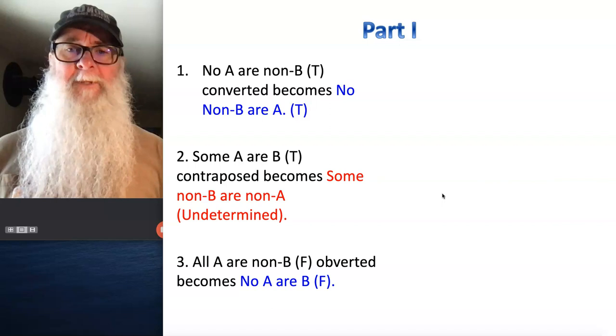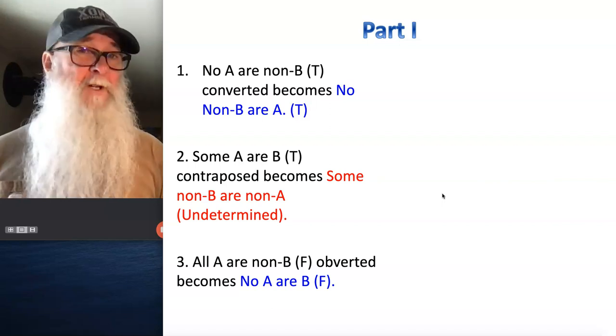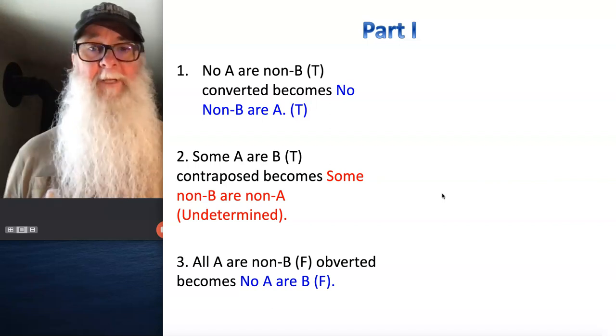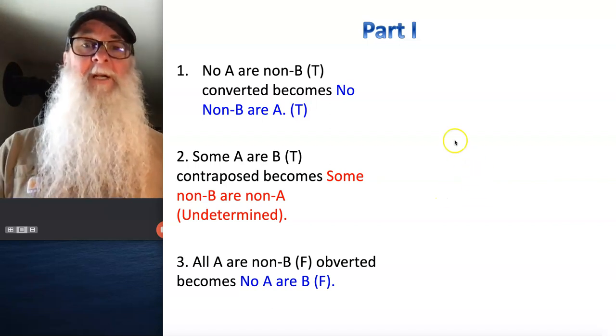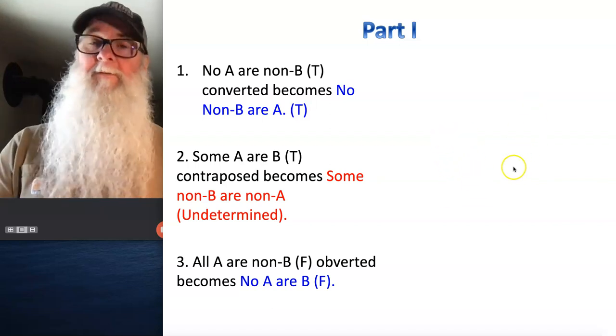And number three: all A or non-B, false. Obverted, it becomes no A or B — also false.